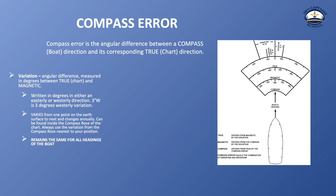Variation is the angular difference measured in degrees between true and magnetic. It is written in degrees in either an easterly or westerly direction — for example, three degrees west. Variation is dependent upon where you are on the earth's surface. True north is the exact top of the earth, while magnetic north is where a compass actually points, which is slightly offset from true. Charts are drawn from true north because actual magnetic north changes annually, and you need a fixed reference point. So your compass points to magnetic north, and that angular difference is where we get variation.